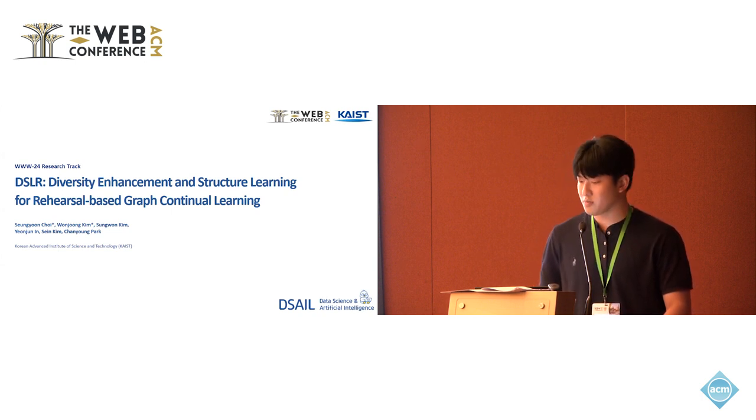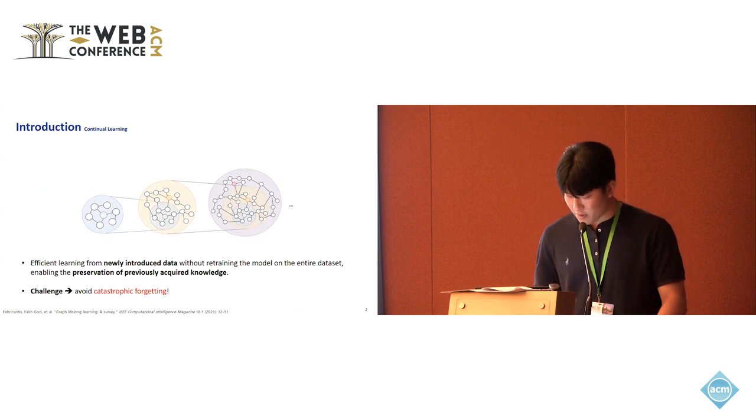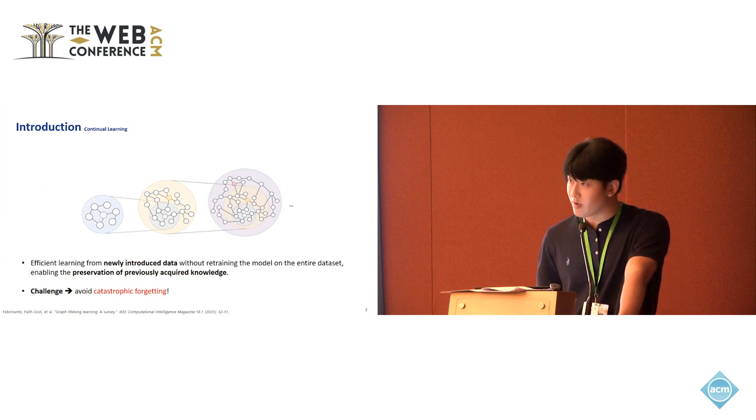Today, I'm going to talk about my research paper, DSLR: Diversity Enhancement and Structural Learning for Rehearsal-based Graph Continual Learning. First, let me explain the problem we aim to address. Continual learning in graphs is depicted as follows. As new nodes and edges are continuously added, it is important to preserve past knowledge without retraining the model on the whole dataset. The phenomenon of the model forgetting knowledge learned in the past is referred to as catastrophic forgetting, and reducing this forgetting is the main challenge in continual learning.